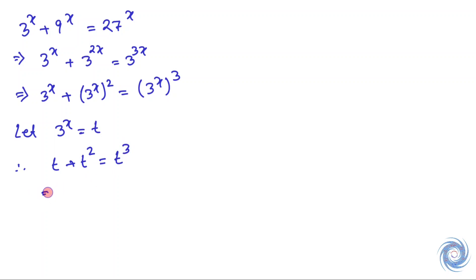This implies from here we get t plus t squared equals t cubed. Since 3 to the power x is non-zero for all values of x, we have t not equal to zero, and this implies t cubed minus t squared minus t equals zero.